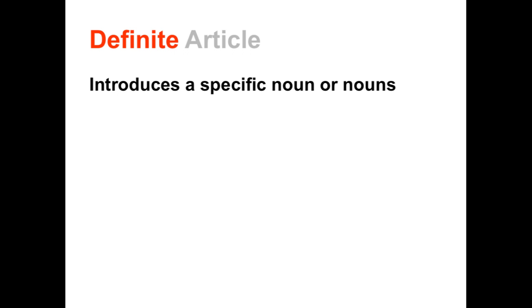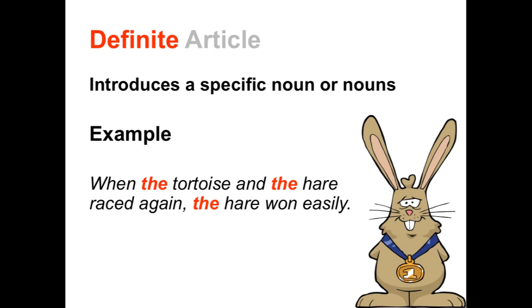Definite article. The definite article introduces a specific noun or nouns. The definite article is the word 'the.' Here is an example of a sentence using the definite article: When the tortoise and the hare raced again, the hare won easily.